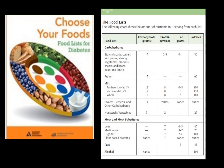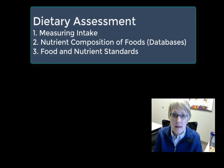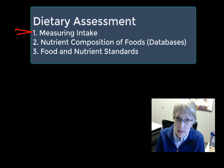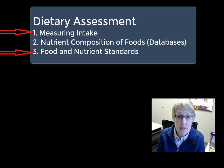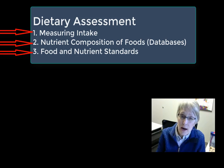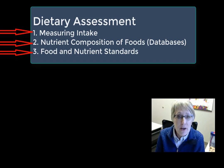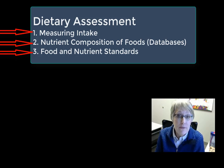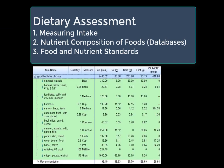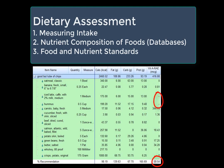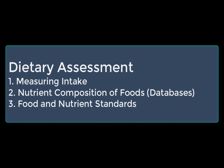Completing a dietary assessment has three key elements: measuring intake and having a food or nutrient standard to compare it to are the two most students remember, but the third — nutrient composition of foods and the databases used — is often overlooked. Make sure the database you're using is appropriate for the nutrient you're trying to assess. Don't just look at totals — examine the spreadsheets for any missing data points, or you'll be underestimating someone's consumption. All three elements are important for an accurate dietary assessment.